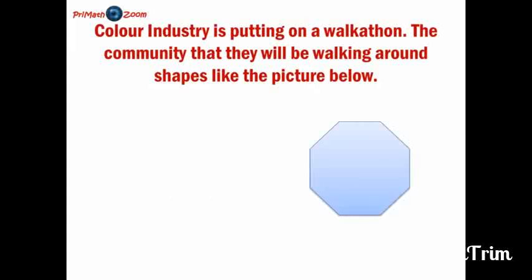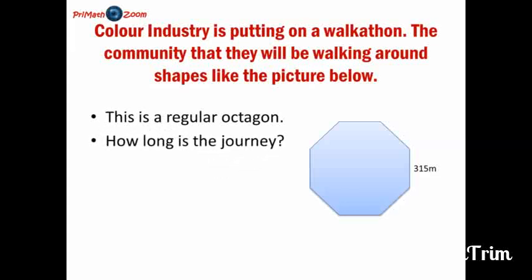Yes, an octagon. This is an octagon, with one of the sides measuring 315 meters. Now, if we want to know how far one person would walk, we have to take a lot of things into consideration. Now, here, this octagon is not just any octagon. It's a regular octagon. And we want to know how long the journey is. Can you tell us how we could find how long the journey is?